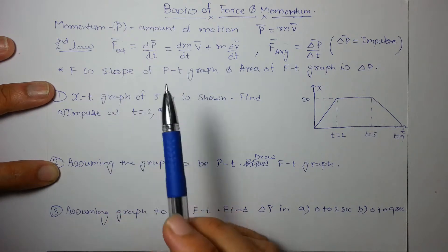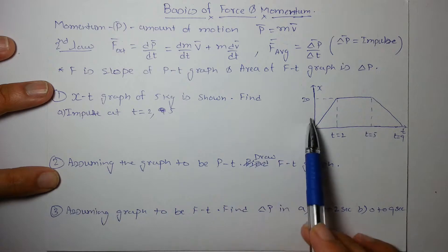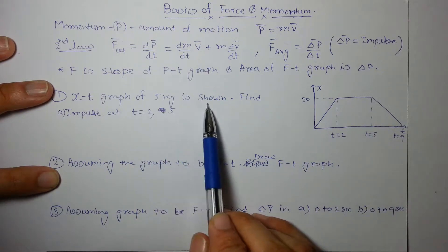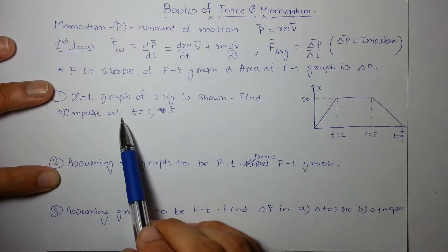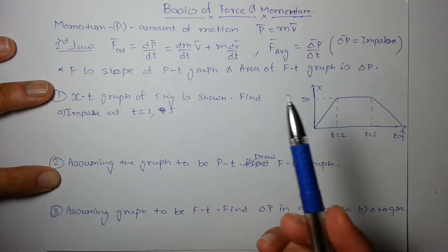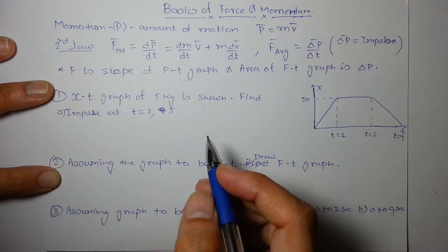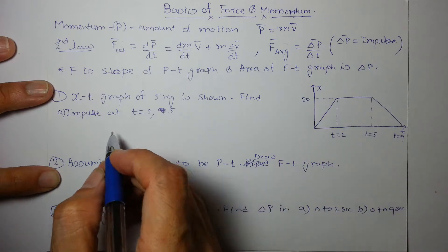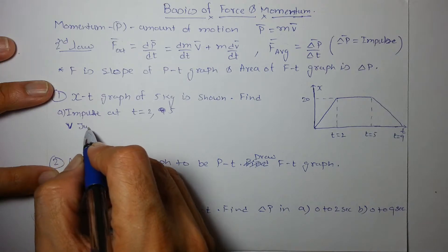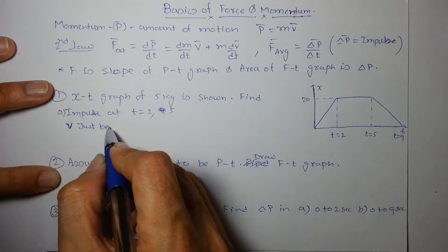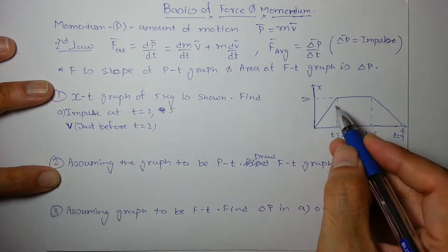Let's start an example. Assuming it to be an x-t graph, the mass of the particle performing this motion is 5 kg. We have to find the impulse at t = 2 and t = 5. For impulse we need momentum, and for momentum we need velocity.